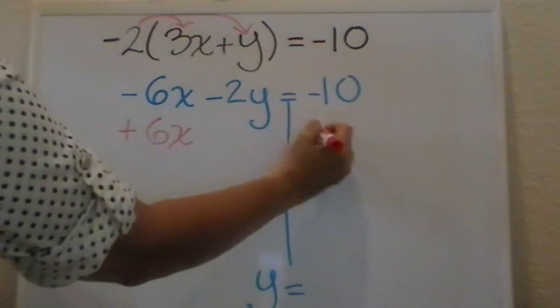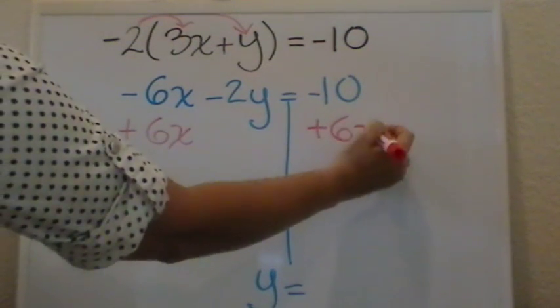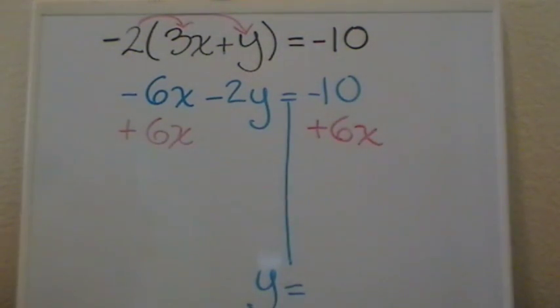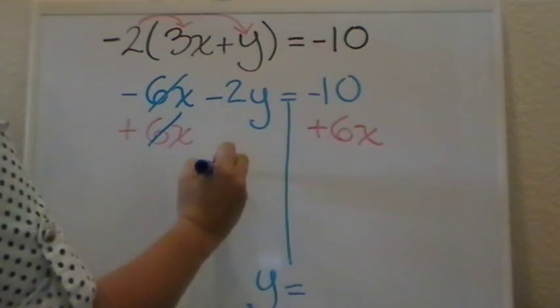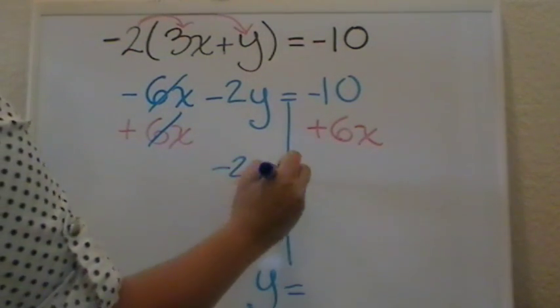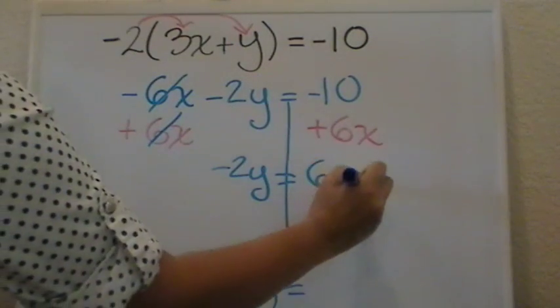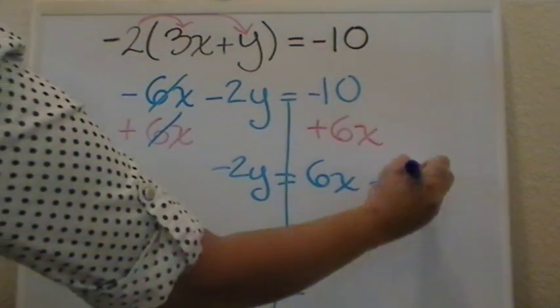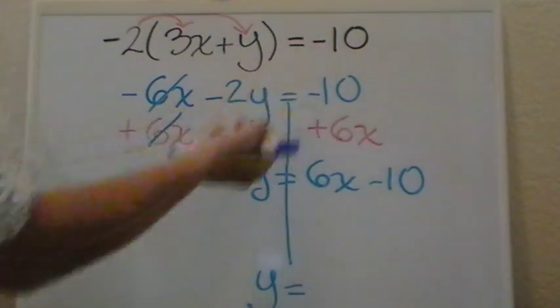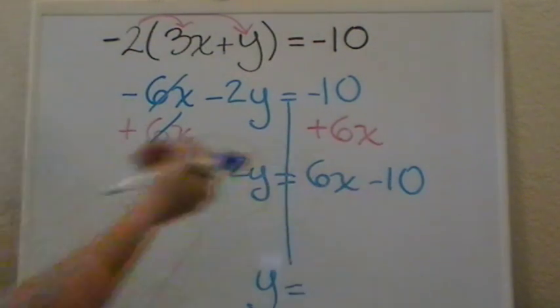What I do to one side, I do to the other. I will notice now that those two cancel. I have negative 2y equals 6x minus 10. Being unlike terms, the only thing that I can do is write them next to each other.